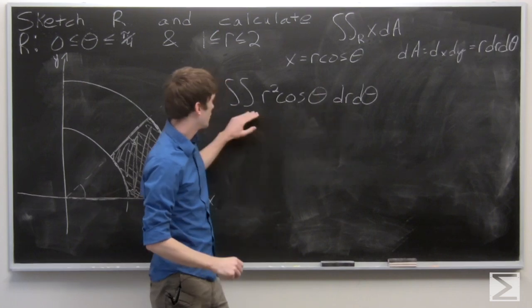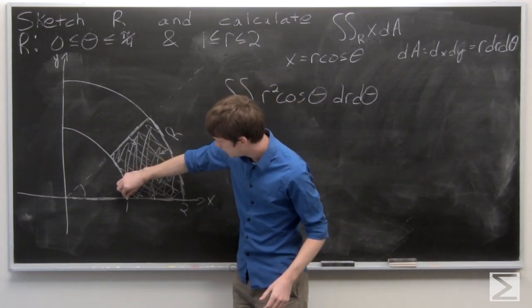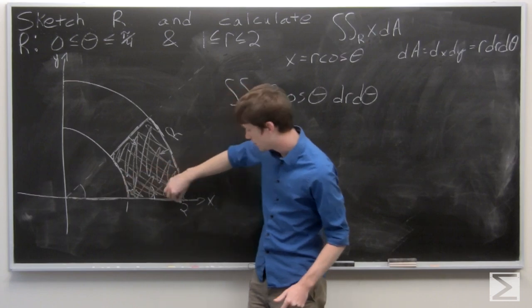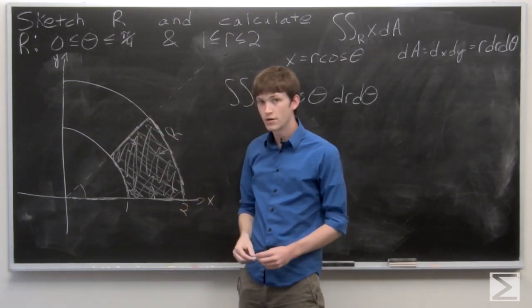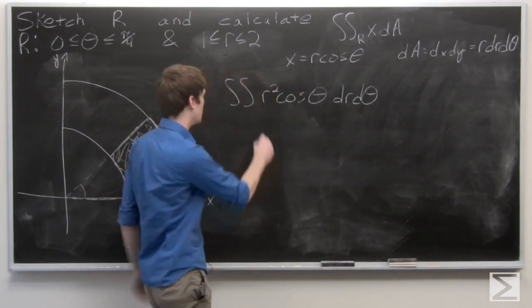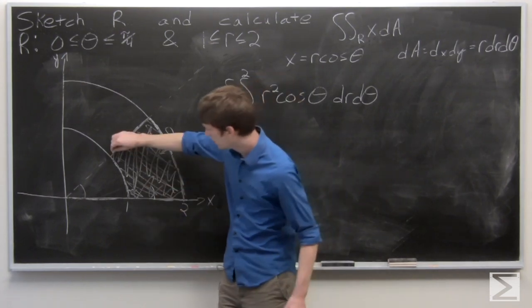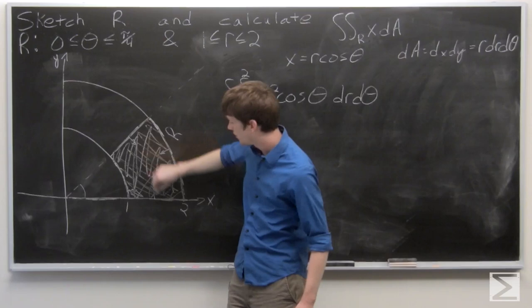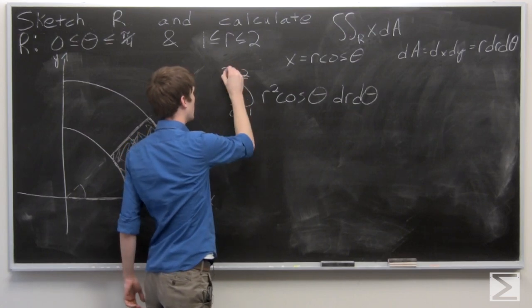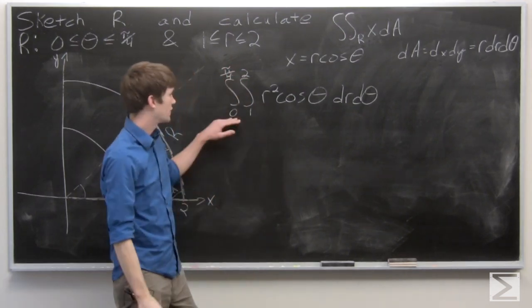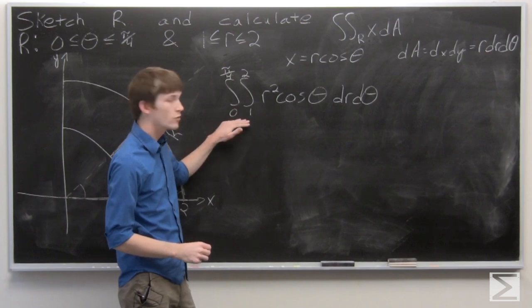Now our limits of integration on R. We can look at our picture. We're going to be varying R from the circle R equals 1 to R equals 2, and that's at all points along our region R. So we can set our limits to be from 1 to 2. And our theta at all radiuses is ranging from 0 to pi over 4. So we have our iterated integral set up now.